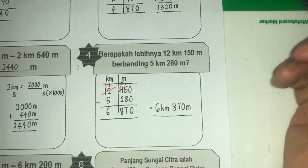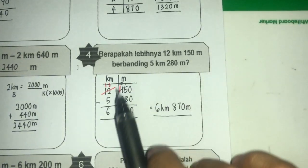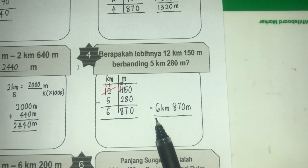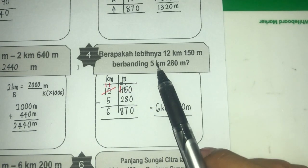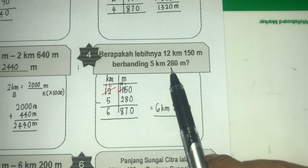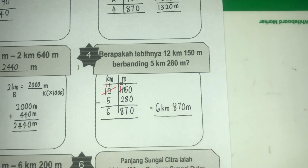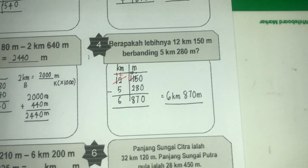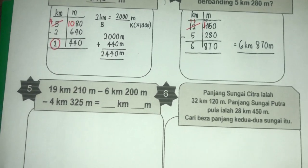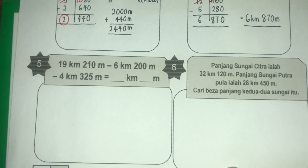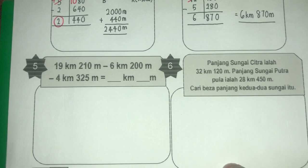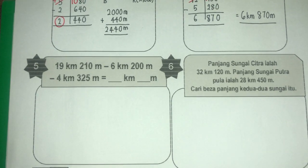Itulah lebihnya jika nak dibandingkan. Soalan yang seterusnya — soalan yang kelima — melibatkan penolakan ukuran panjang sehingga 3 nilai.